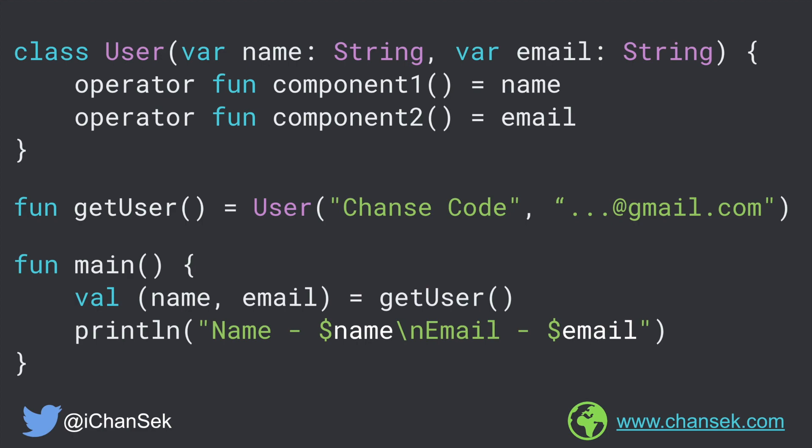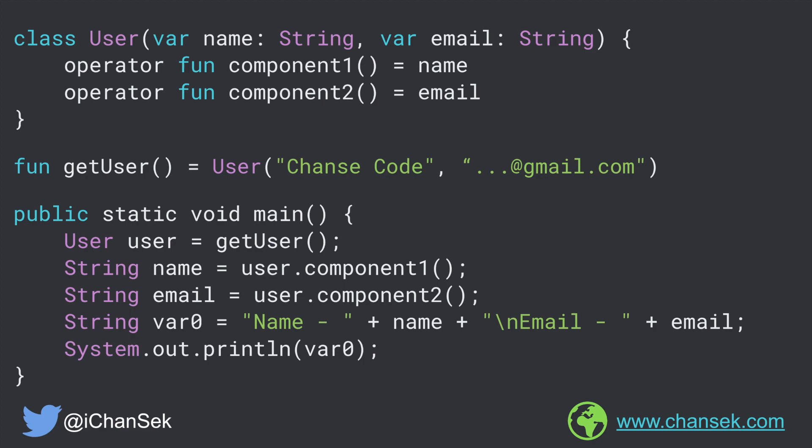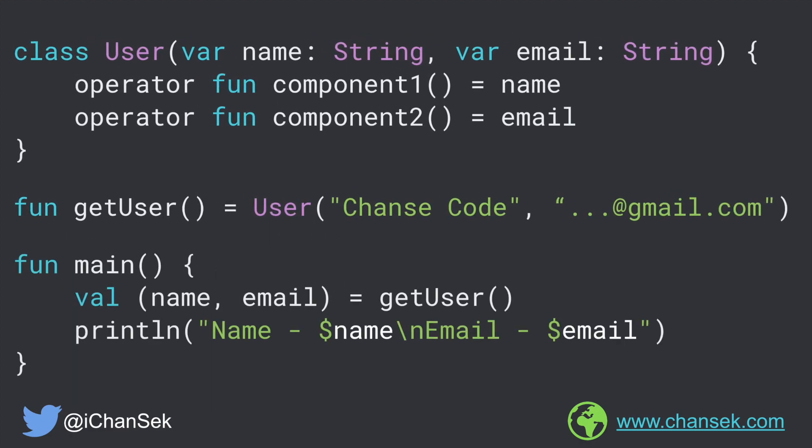Now the question is: how does this get executed by the JVM? Let's go ahead and see what is going on under the hood. The main function gets converted into public static void main. Now coming back to the topic, the first line of the main function gets converted into something like this, and the println gets converted into something like this. By seeing this Java equivalent code, we can easily understand that even though the getUser function looks like it returns multiple values, it actually doesn't. All the values wrapped inside the parentheses are being associated with the corresponding component functions of the User class. For example, name — being the first value inside the parentheses — is being associated with the component1 function of the User class. Similarly, email is being associated with component2 of the User class.